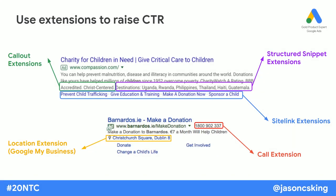One of the best ways to raise your click-through rate is to use extensions — I recommend you try all of these. Callout extensions are simple short phrases, often one or two words, that you can append to any of your ads at the campaign, account, or ad group level. Common things to put there include your charity registration number, the name of the organisation, or 'tax deductible donation' — short phrases that might compel people to click.